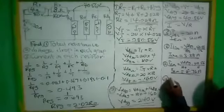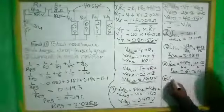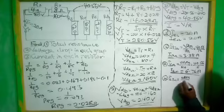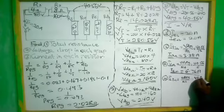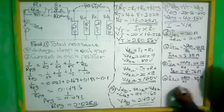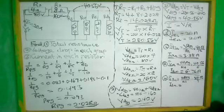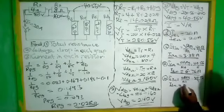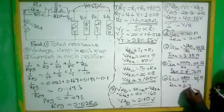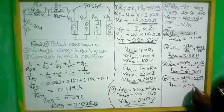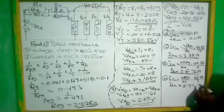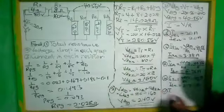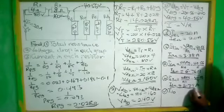Current in R5 (7 ohms) equals the voltage drop in the parallel group over R5. That is 40.56 divided by 7, which gives us 5.79 amps. This is the current in the 7-ohm resistor.